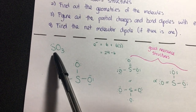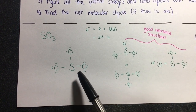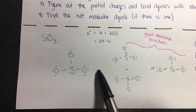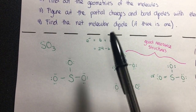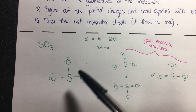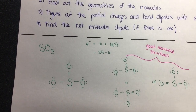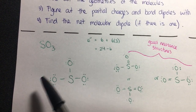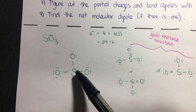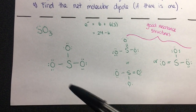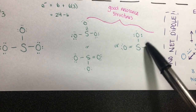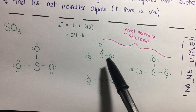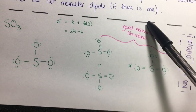First, we start with SO₃. Drawing the Lewis structure, we put S in the middle and add a bond for each oxygen. There are 24 electrons in this molecule. With one bond, we subtract 6, leaving 18. The remaining electrons go on each outside atom, but sulfur does not have the octet, so we need a double bond to complete sulfur's octet. When we draw that resonance structure, we find all three are valid resonance structures.